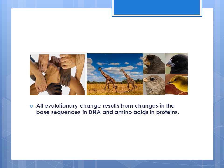They studied observable changes — for example, the shape of a bird's bill, the length of an animal's neck, and so many others. All evolutionary changes have resulted from changes in the base sequence in the DNA, and then in the amino acids of the protein.